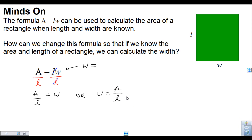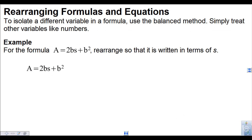We can rewrite it so that it says W is equal to A over L. This formula will find the width if you know the area and the length — we just do area divided by length. That's a simple example, but we're going to go through some more complicated ones. To isolate a different variable in a formula, we're going to use the balance method, and we're going to treat the other variables we're not isolating like regular numbers.